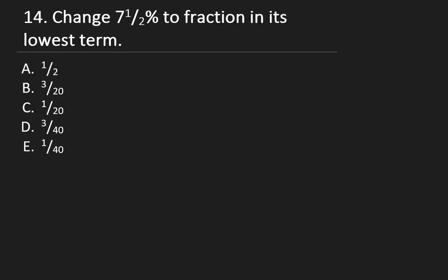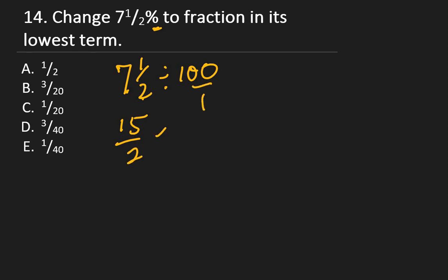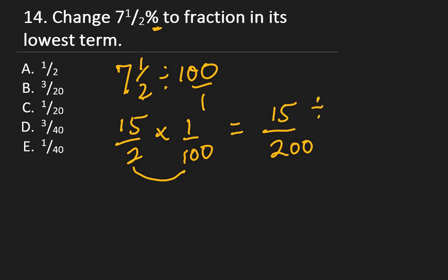Question 14: Change 7.5% to a fraction in its lowest terms. The percent symbol means divide by 100. 7.5 over 100 becomes 15/2 over 100, which equals 15/200. Reducing to lowest terms by dividing both by 5: 15 ÷ 5 = 3, and 200 ÷ 5 = 40. The answer is 3/40, which is D.